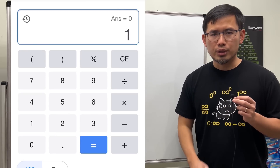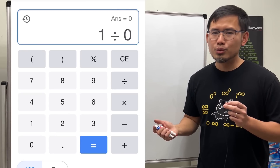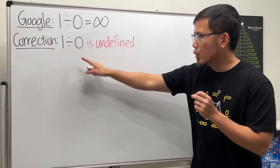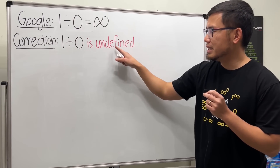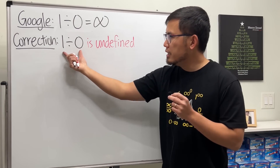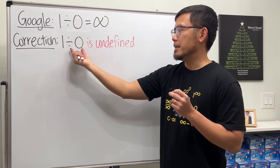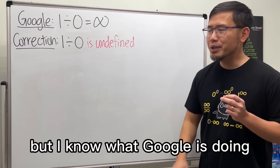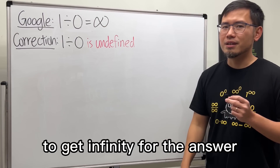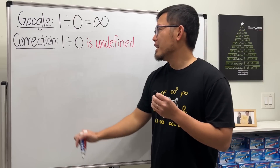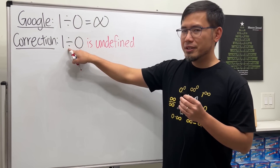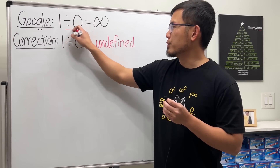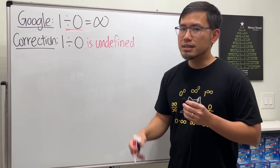I want to address the issue that Google calculated one divided by zero as equal to infinity. That's not true because one divided by zero is undefined — this expression has no answer because we cannot divide by zero. But I know what Google is doing to get infinity for the answer, and let me explain.